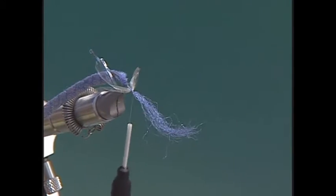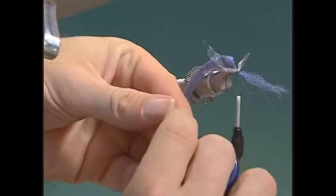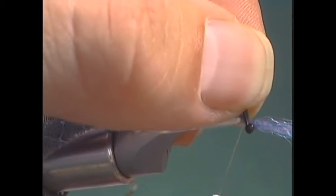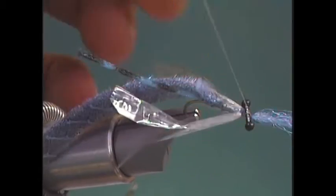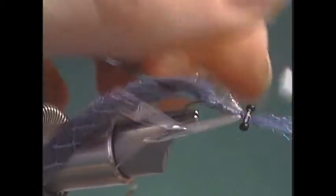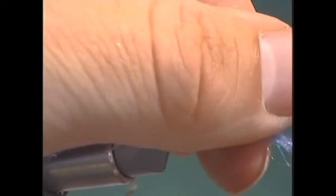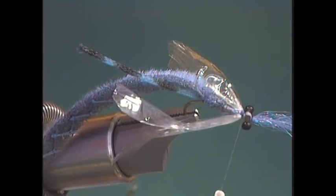Now we're ready to tie in our eyes. Reach down, pick up our eyes. We'll lay that right between the wing and that blue Zeelon. We'll tie it in with some figure eights, making sure we have equal amount of stem sticking out on each side. We'll make sure it's tied in there nice and tight. I'm going to finish with our thread right behind the eye.